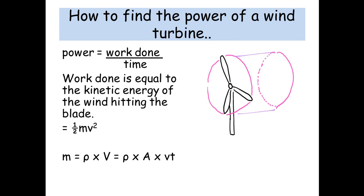What I mean by the volume — imagine every second going past our wind turbine is basically like a cylinder of air. We've got our cross-sectional area, and also this length here — the length will be equal to the wind velocity times the time. An easy way to do this is just make time equal to one second, so that will tell us every second how much air is going past our wind turbine.